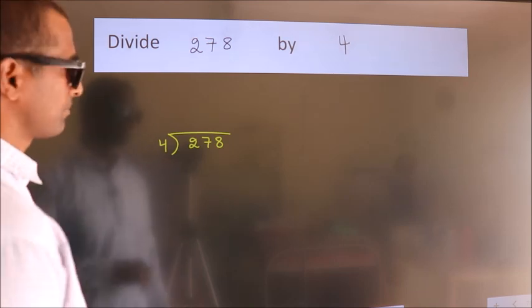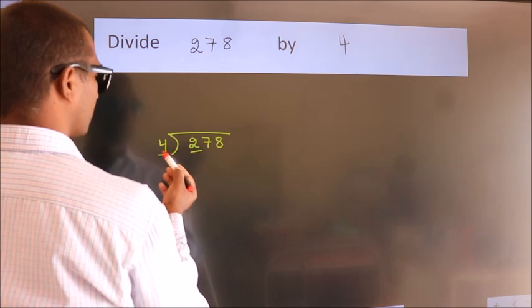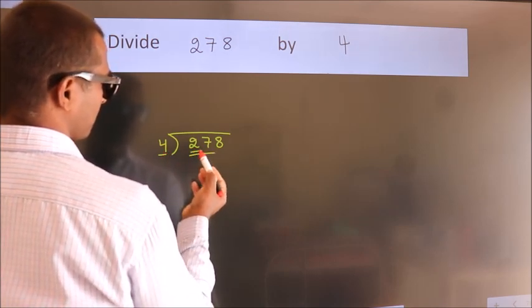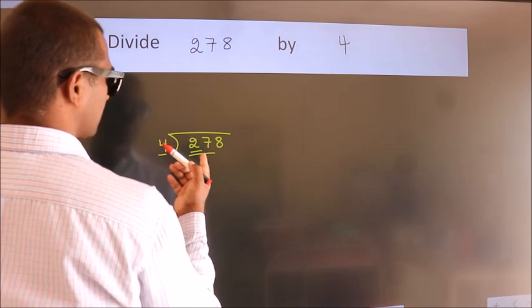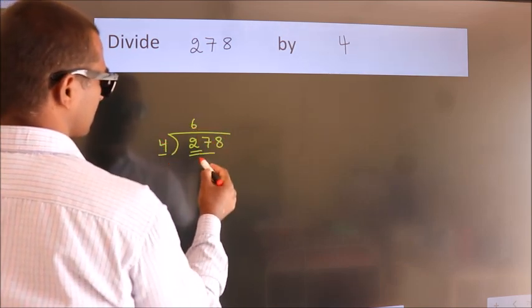Next. Here we have 2. Here 4. 2 is smaller than 4, so we should take 2 numbers. 27. A number close to 27 in the 4 table is 4 times 6 is 24.